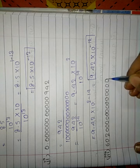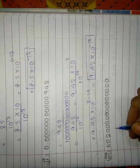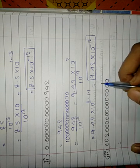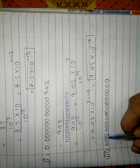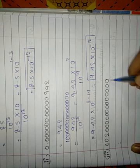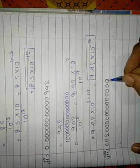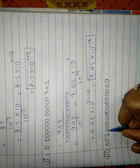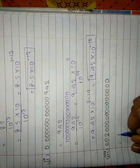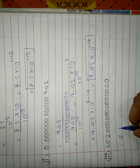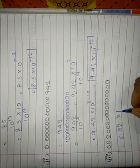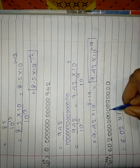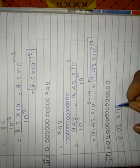Third problem: 602 followed by 13 zeros. Using the direct method, we move from left to right counting positions until we reach a digit between 1 and 10. Moving 15 positions gives us 6.02 × 10 raised to 15.